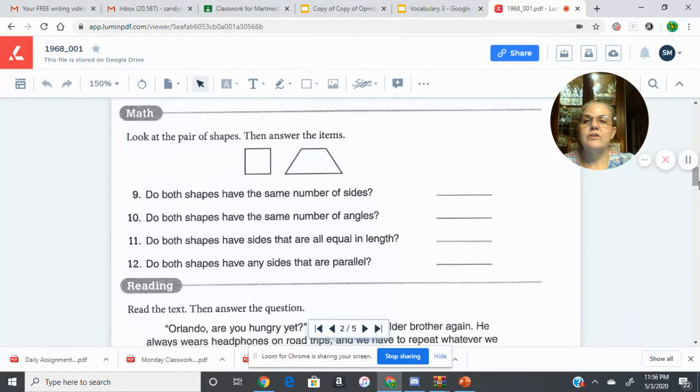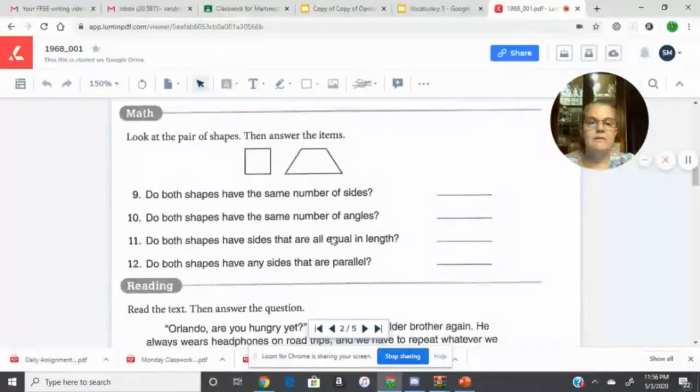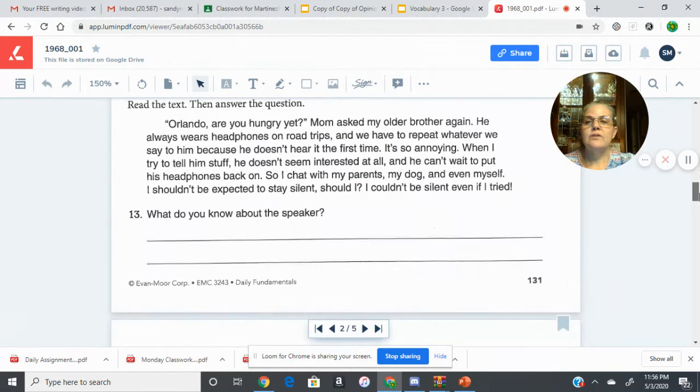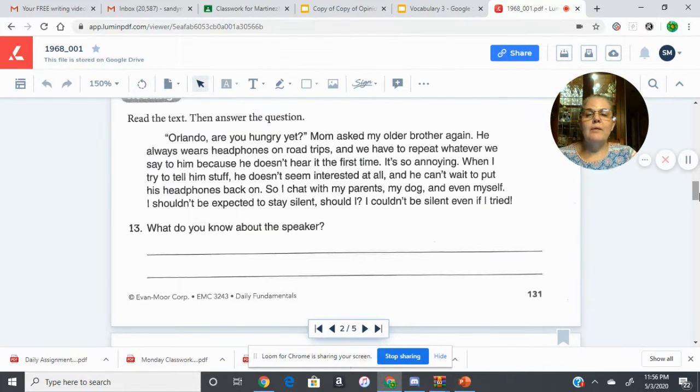In your math, look at the pair of shapes. We've got a square and a trapezoid. Then answer the items. Do both shapes have the same number of sides? Do both shapes have the same number of angles? Do both shapes have sides that are all equal length? Do both shapes have any sides that are parallel? In our story, we're going to answer the question, what do you know about the speaker?